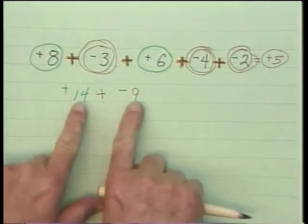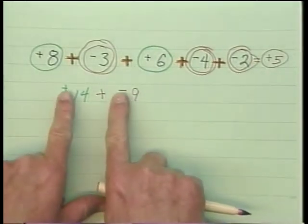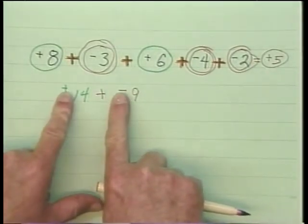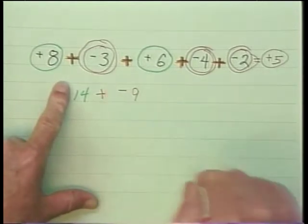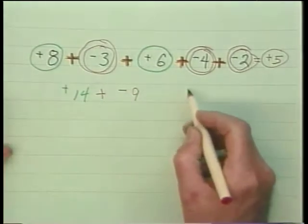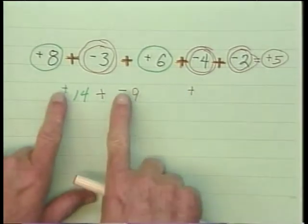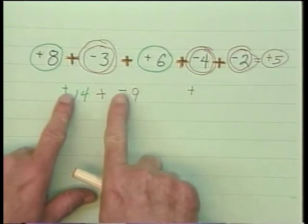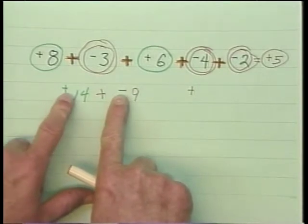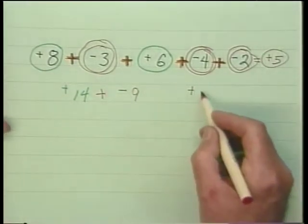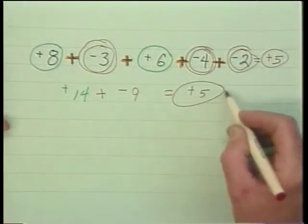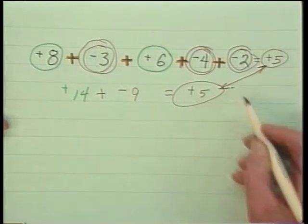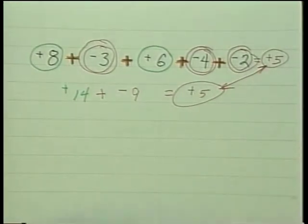Now I'm only adding two numbers with unlike signs. This one has the larger absolute value, so my sum will be positive. Since I'm adding unlike signs, I take the difference, which is 5 — and indeed that's the answer. That's much faster.